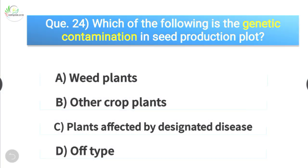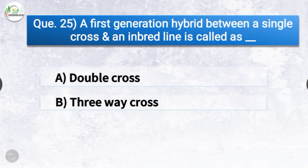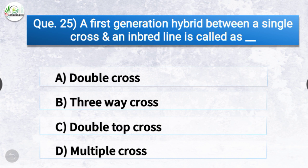Question number twenty-five: A first generation hybrid between a single cross and an inbred line is called — the options are double cross, three-way cross, double top cross, or multiple cross. The correct answer is option B — three-way cross. A first generation hybrid between a single cross and an inbred line is called a three-way cross.